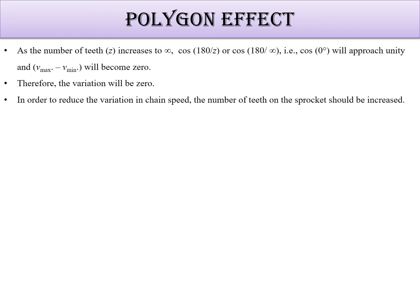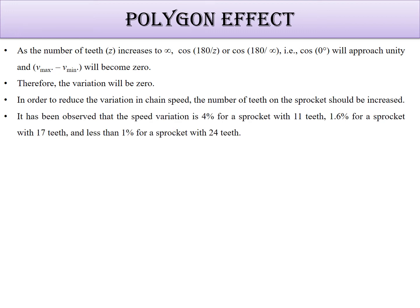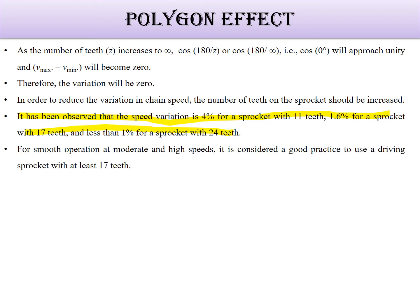In practice, with 11 teeth the speed variation is 4%, with 17 teeth it is 1.6%, and with 24 teeth it drops below 1%. More than 24 teeth is ideal, but not always practical. Therefore, a minimum value of 17 teeth is defined — whenever designing a sprocket, assume 17 or 18 teeth as the baseline. This is the polygon effect, named because the sprocket forms a polygon shape.